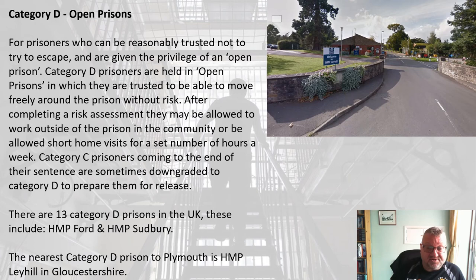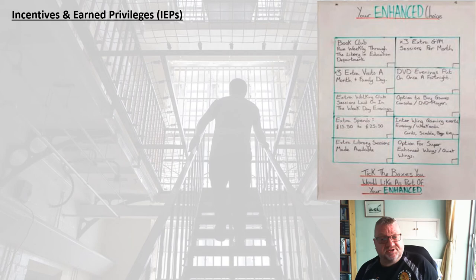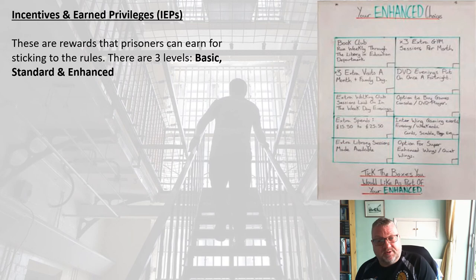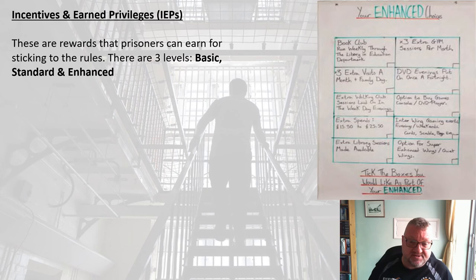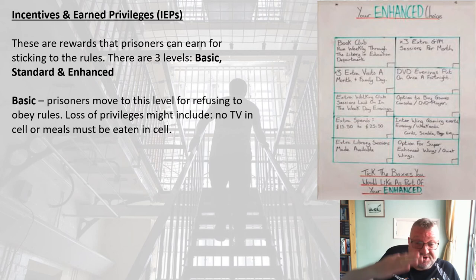The open prison is about getting people ready for release and work on the outside. In Britain, we have IEPs — Incentives and Earned Privileges — which are rewards prisoners can earn for sticking to the rules. There are three levels: basic, standard, and enhanced. All prisoners start at standard when they enter the prison system and can go up to enhanced or down to basic.